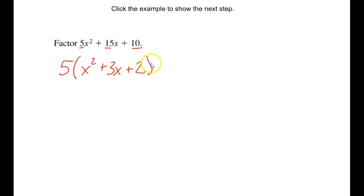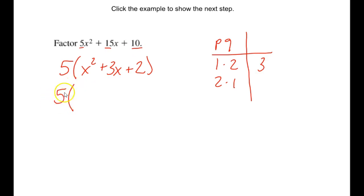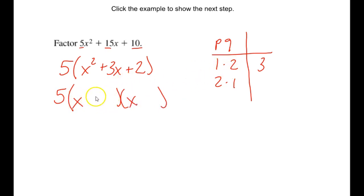Now I can factor the remaining trinomial. I want to find all factor pairs of 2, which are 1 times 2 or 2 times 1. Since the leading coefficient is 1, order doesn't matter. When I add them together, I get 3, which matches the middle term. So now I can finish factoring. That 5 stays out front, and I factor into two binomials: x plus 1 and x plus 2. So the final answer is 5 times the quantity x plus 1 times the quantity x plus 2.